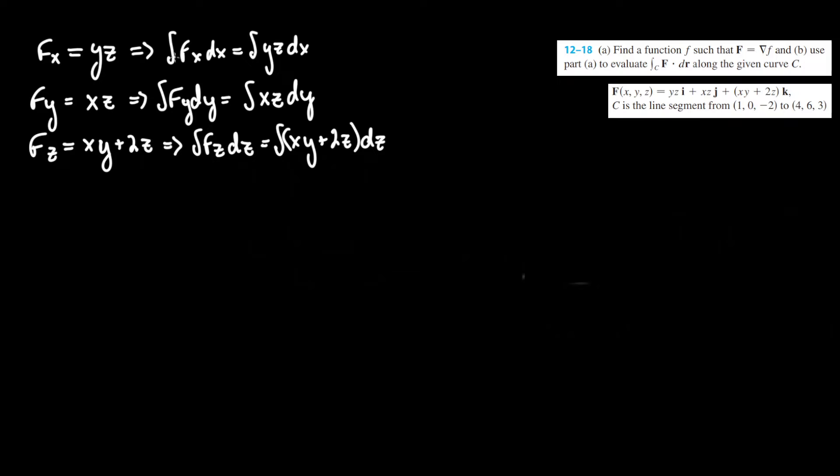Why do we do this? It's because we're taking the integral of each of the partial derivatives of the single function, which would yield a parent function. Once we take all the components and sum them up together, we get our parent function which will be the answer of f.